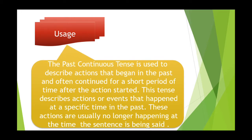First of all, let's discuss its uses — where to use past continuous tense. The past continuous tense is used to describe actions that began in the past and often continued for a short period of time after the action started. This tense describes actions or events that happened at a specific time in the past.